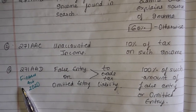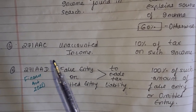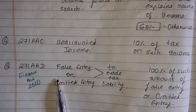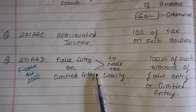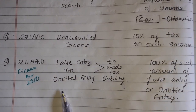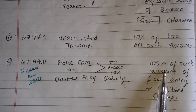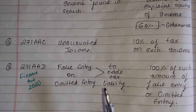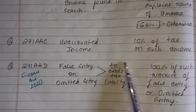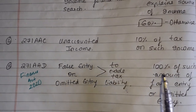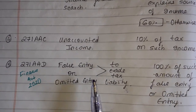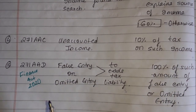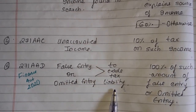Number 5, and this is very important: Section 271AAD — False Entry and Omitted Entry to Evade Tax Liability. This was a new addition asked in MCQ in the last exam. If you have a false entry or an omitted entry to evade tax, the penalty is 100% of such amount of the false or omitted entry. For example, if you have a false entry for ₹10,00,000, the penalty will be 100% of that amount — ₹10,00,000. Remember: false entry and omitted entry, 100% of such amount.